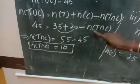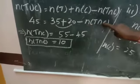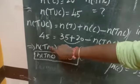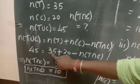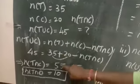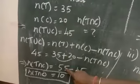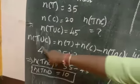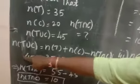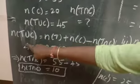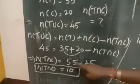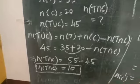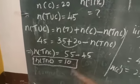Minus N of T intersection C goes to the other side as plus N of T intersection C. So it equals 35 plus 20, which is 55. Now 55 is on one side, and 45 comes to the other side as minus 45. So 55 minus 45 equals 10. Therefore N of T intersection C is equal to 10.